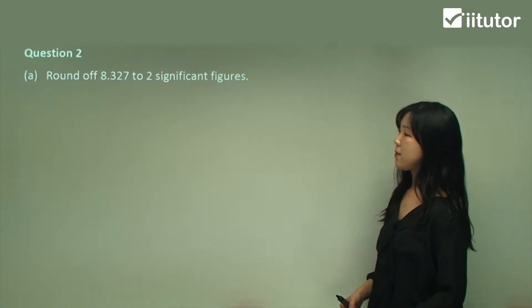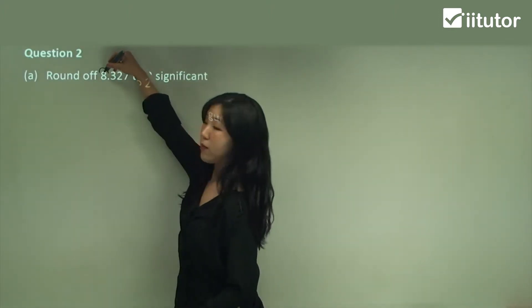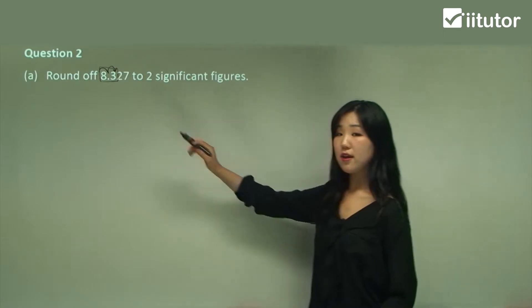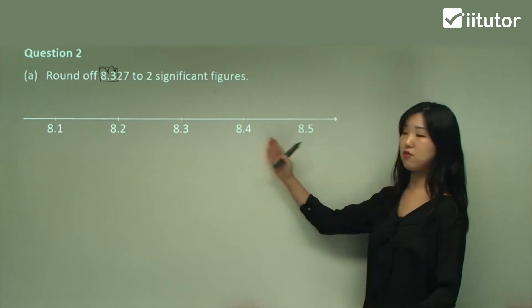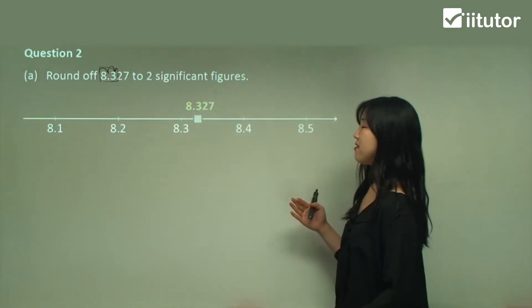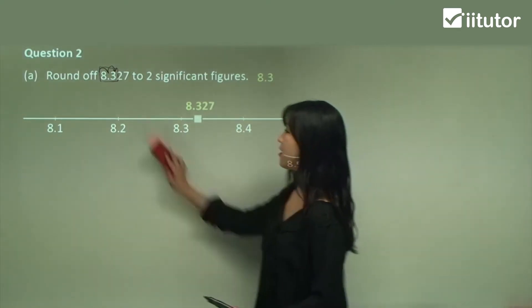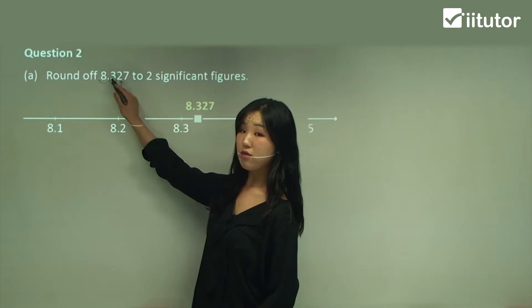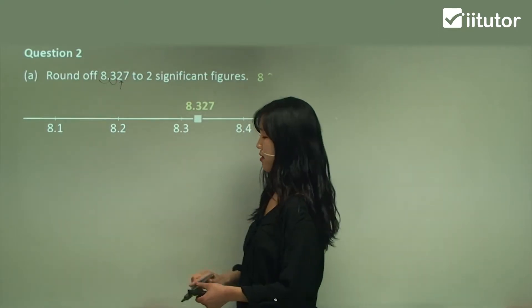Question two: round off 8.327 to two significant figures. We go one, two — including the first two numbers, so the last included value is the three in the tenths place. We go 8.1, 8.2, 8.3, 8.4, etc. 8.327 is between 8.3 and 8.4, and it's closer to 8.3. So the answer is 8.3. Without the number line: the third number after our two significant figures is less than five, so we don't round up — it's just 8.3 as it is.